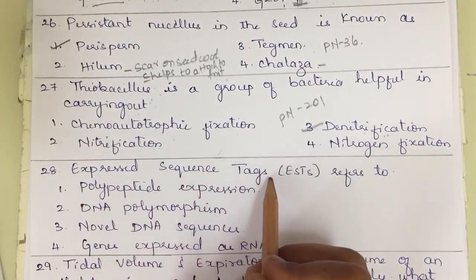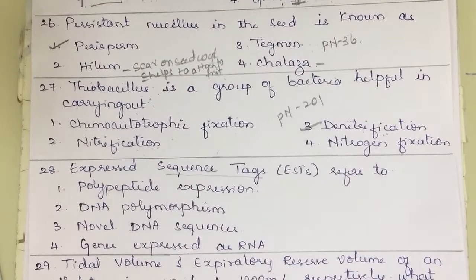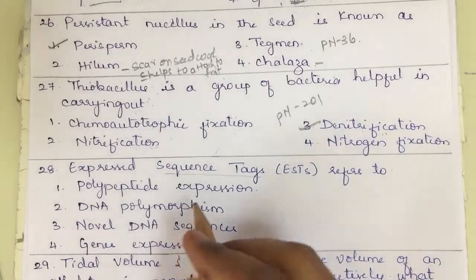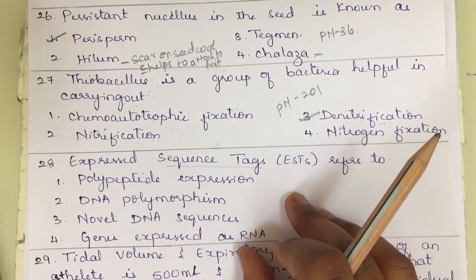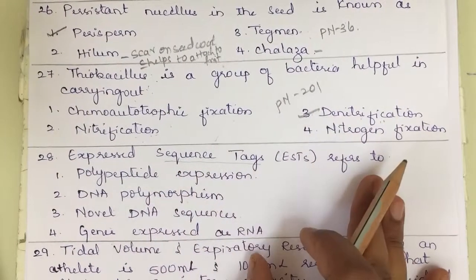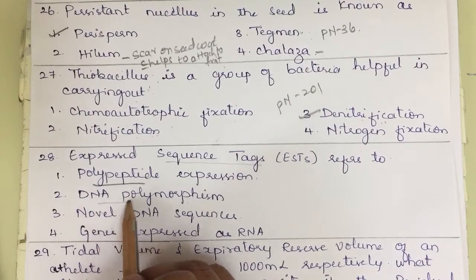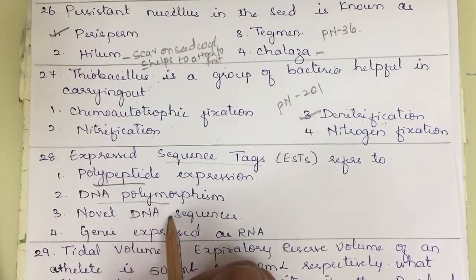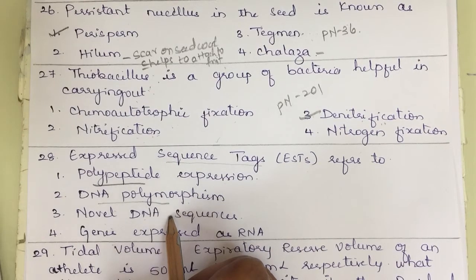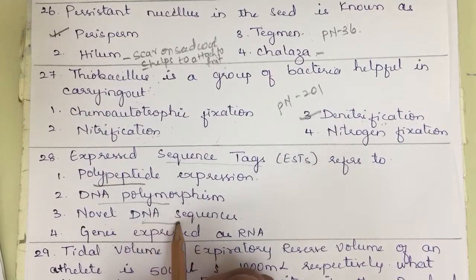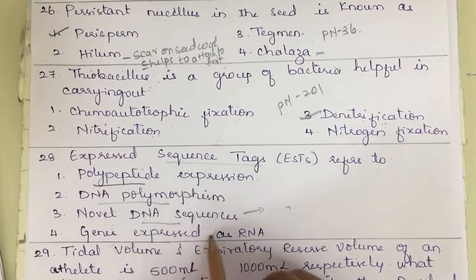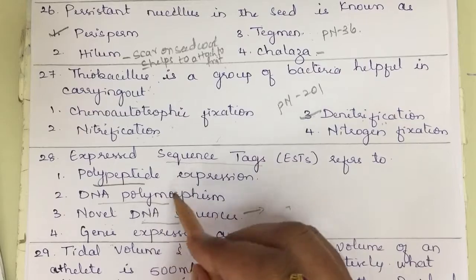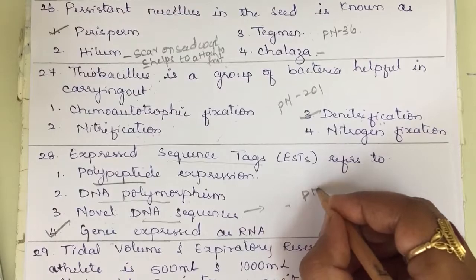Question 28: Expressed Sequence Tags (ESTs) refer to what? The options are polypeptide expression, DNA polymorphism, novel DNA sequences, or genes expressed as RNA. DNA polymorphism refers to a particular sequence repeating many times. Novel DNA sequences are those present in at least one human but absent in a reference genome. The correct answer is: ESTs are genes expressed as RNA. This is a direct question from second year, page number 119.